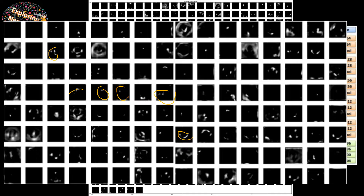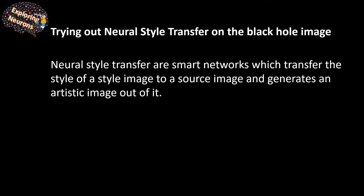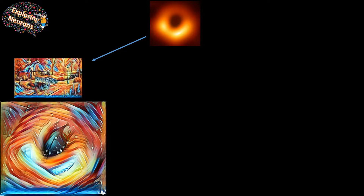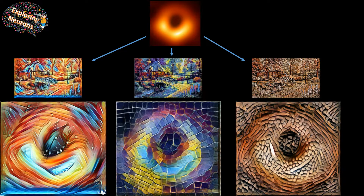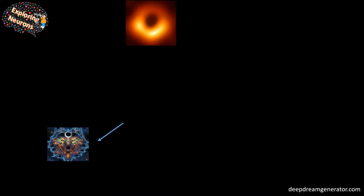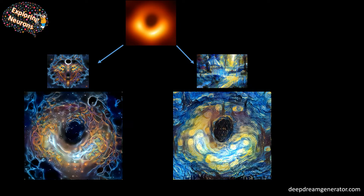I then tried neural style transfer, where one image is transferred into the style of another. I fed the black hole image into a neural style transfer network with different style images, and it generated beautiful results: the black hole in the style of a painting, another style, and so on. AI algorithms are pretty artistic now — they can generate beautiful pictures from the original image. All these images were generated using a website called Deep Dream Generator, which provides the API; you just upload a picture and generate your own neural style transfer.